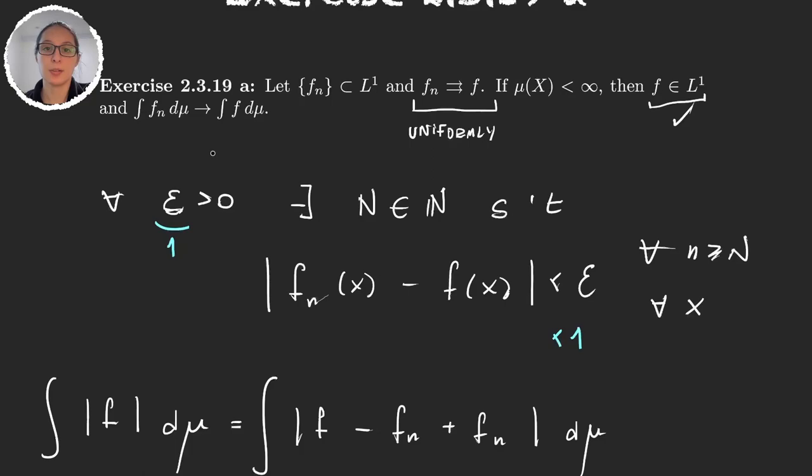Now we have to prove the second one. Well, I already told you we're going to use the dominated convergence theorem, and for the dominated convergence theorem what we need is to find the function g such that we can bound all these functions f_n with g.